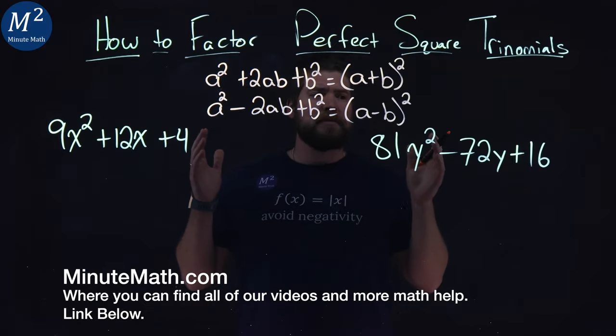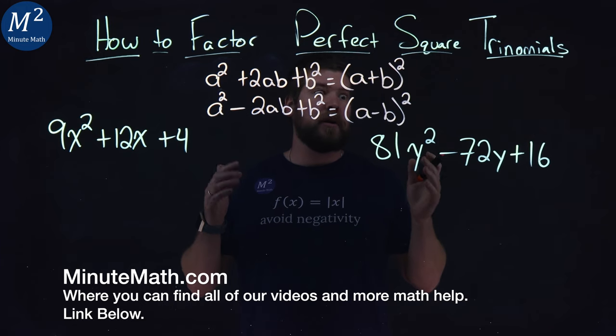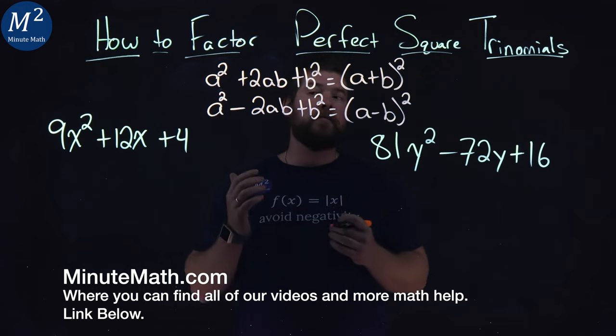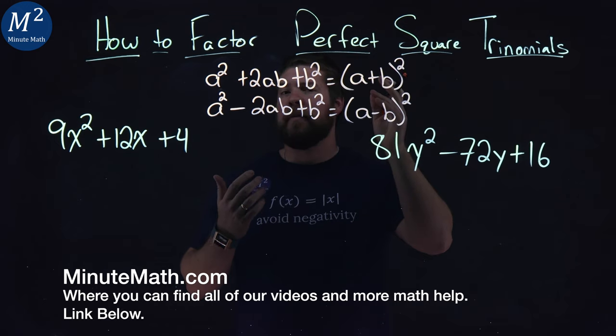We're given two problems here, and they both represent our options when we have a perfect square trinomial. One main difference here is going to be the negative and the positive.